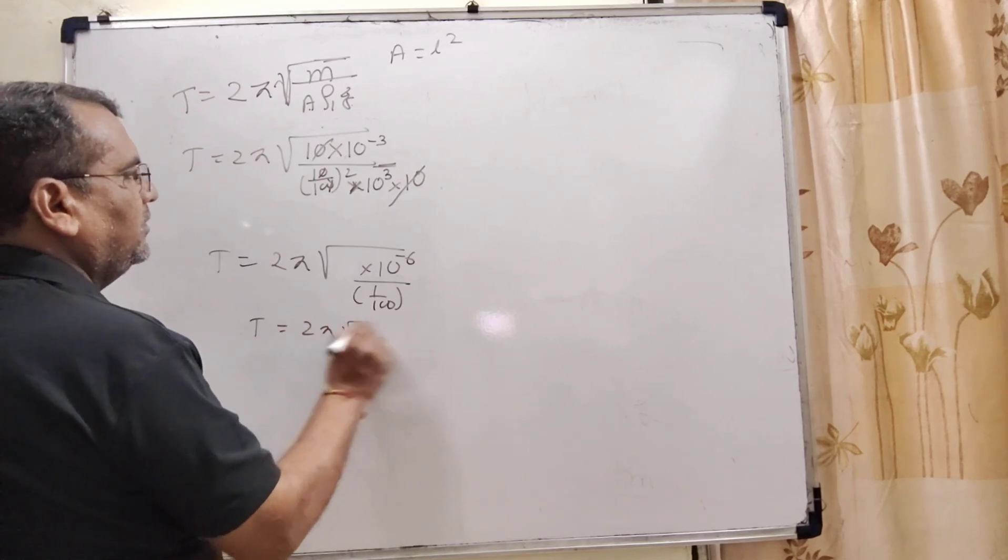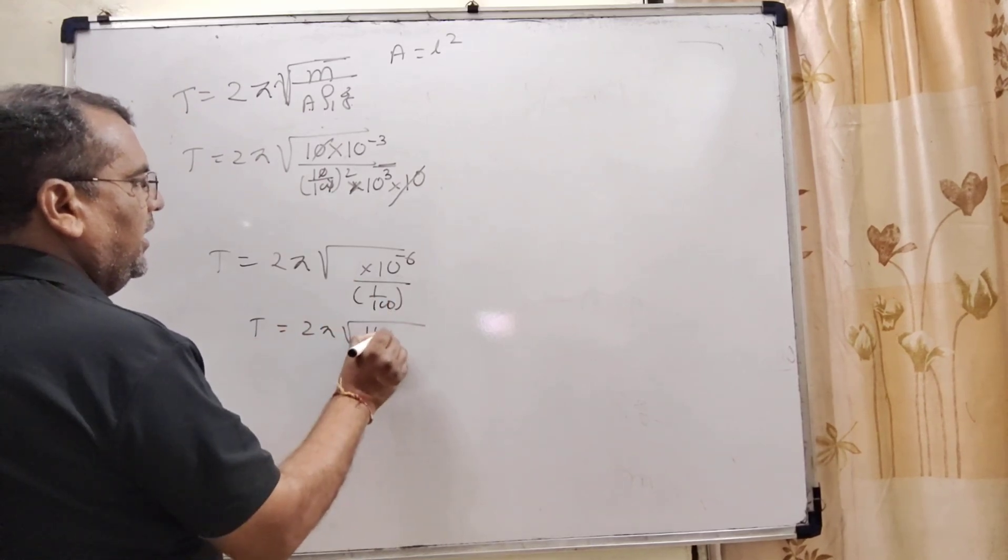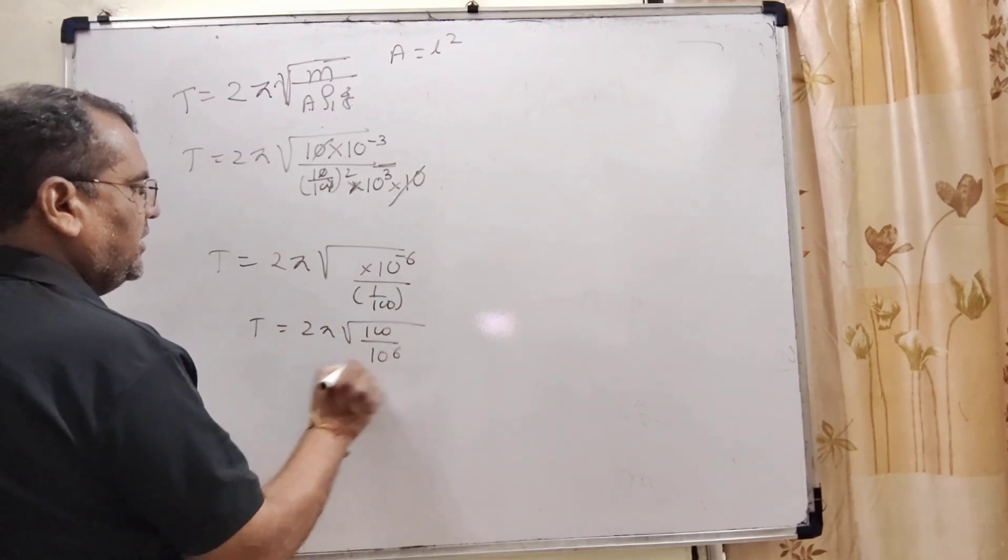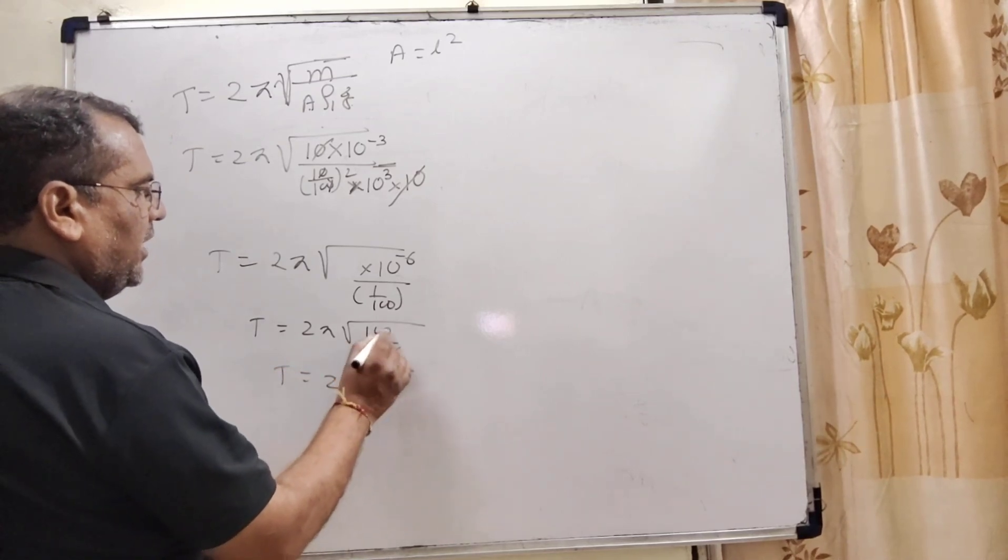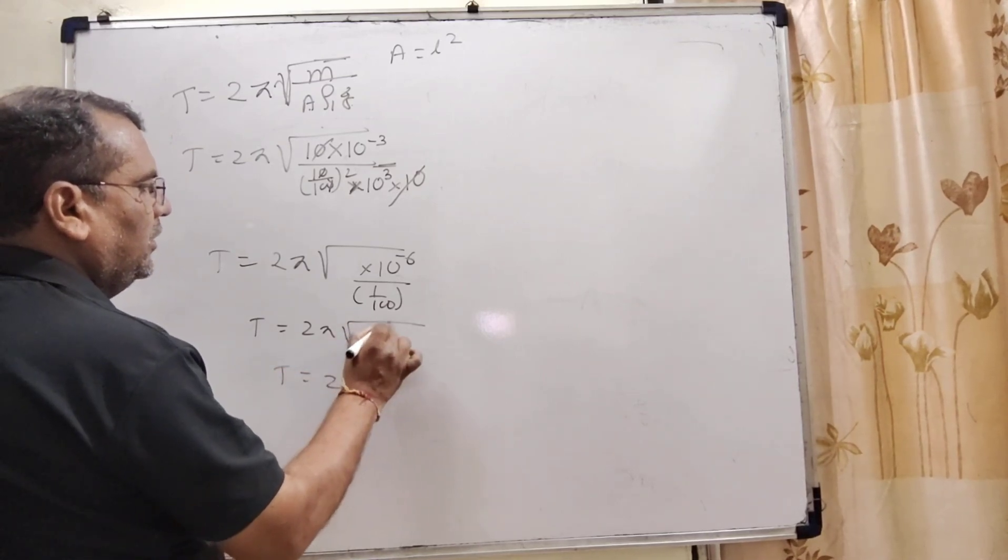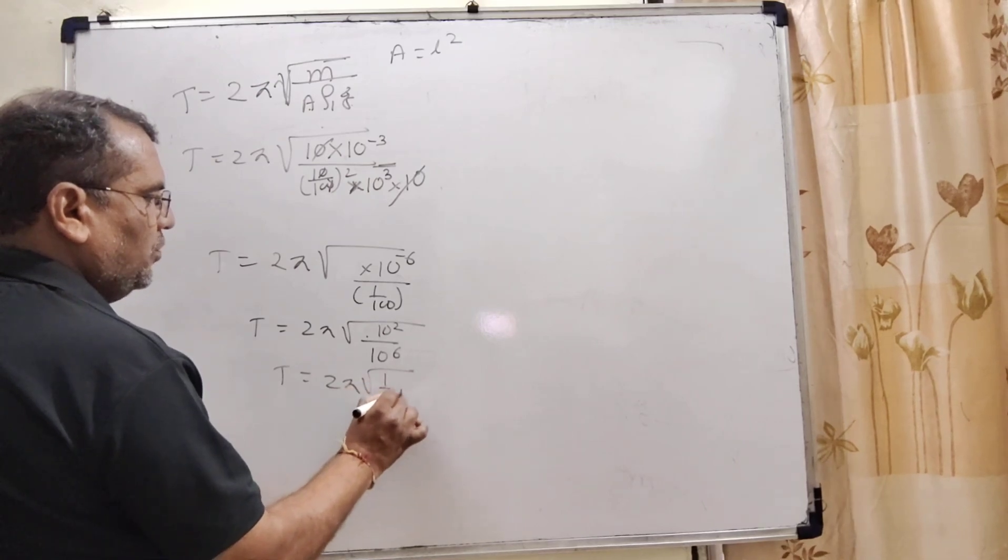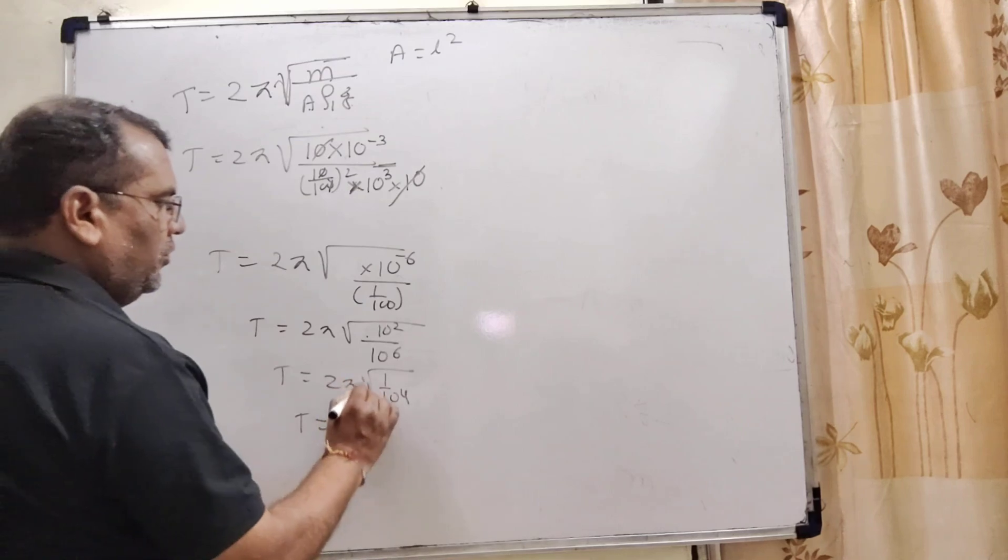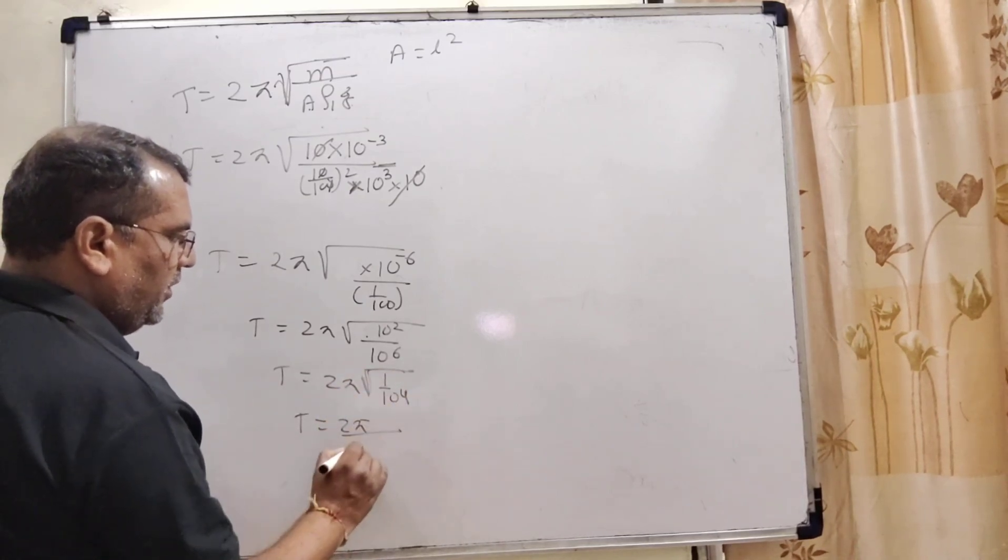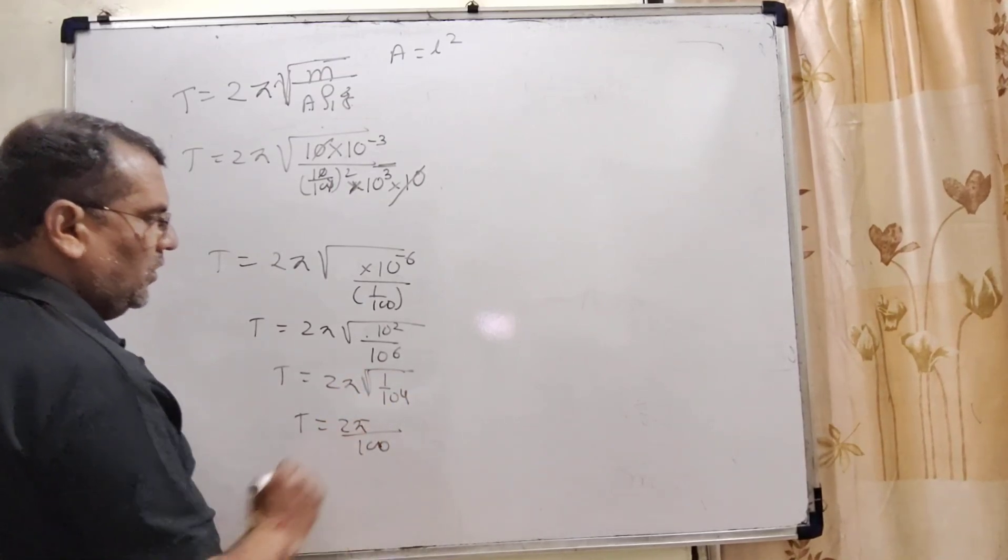So T = 2π√(100/10⁶) = 2π√(10²/10⁶). That's 2π×(1/10²) = 2π/100.